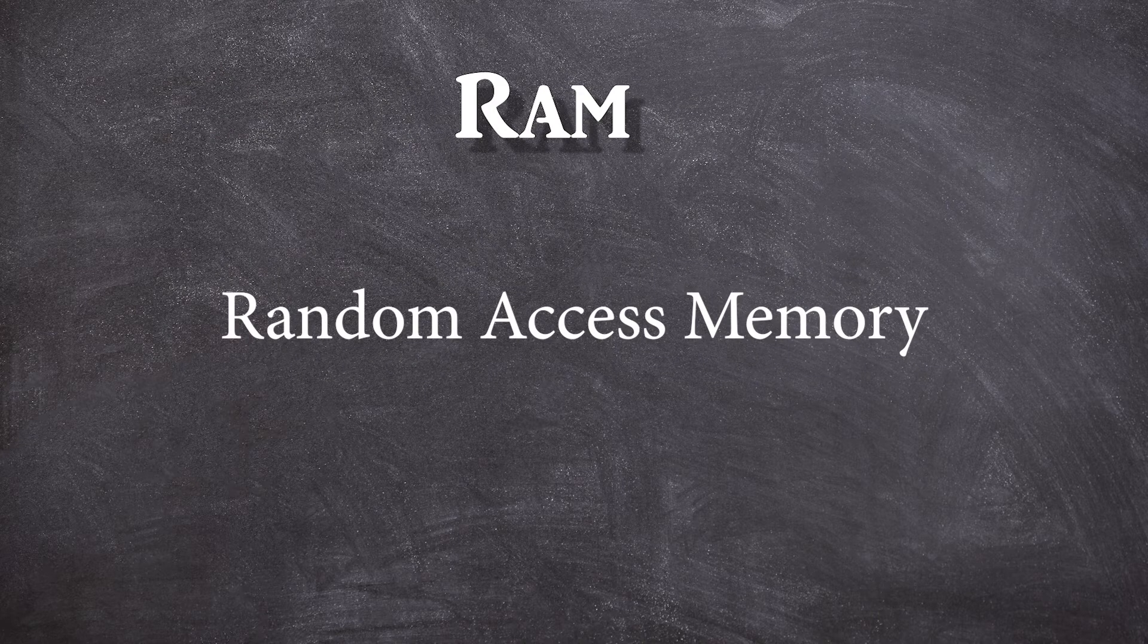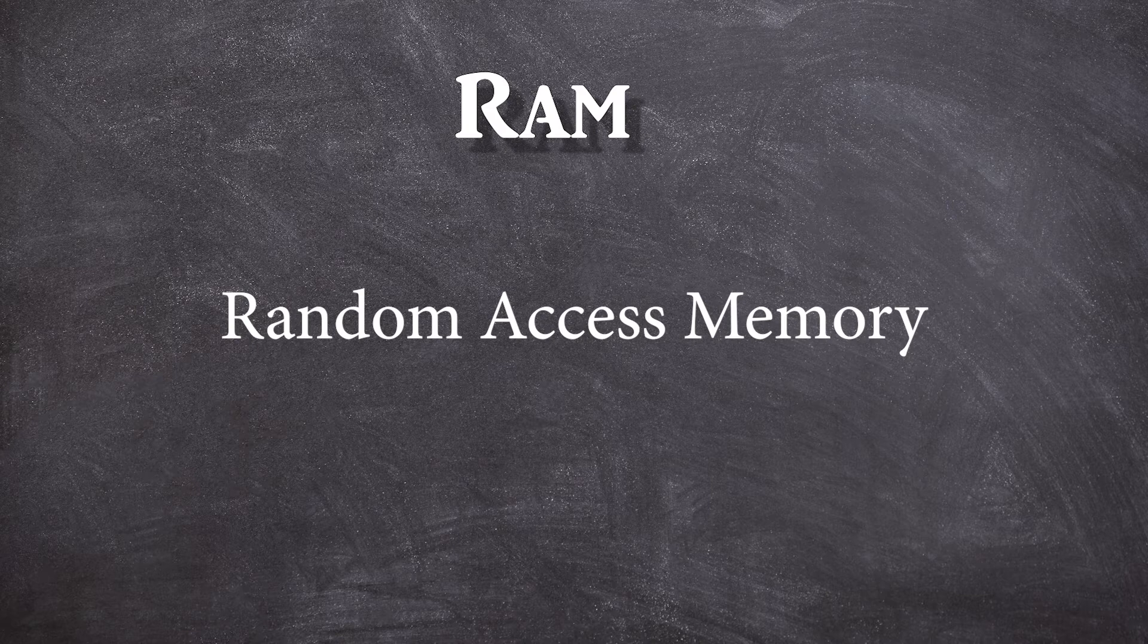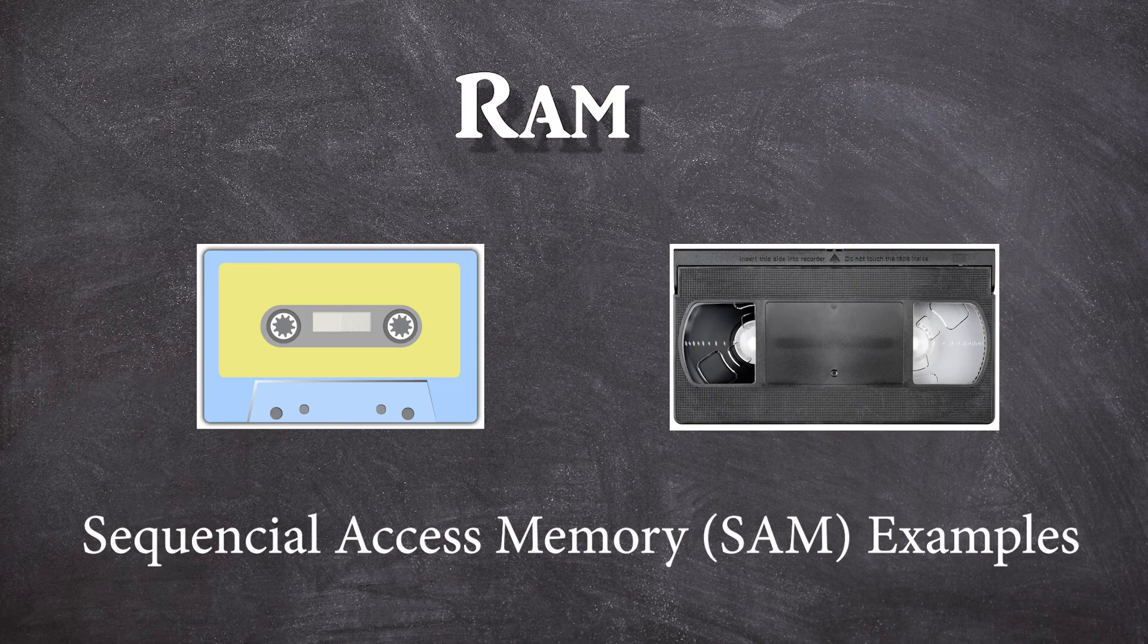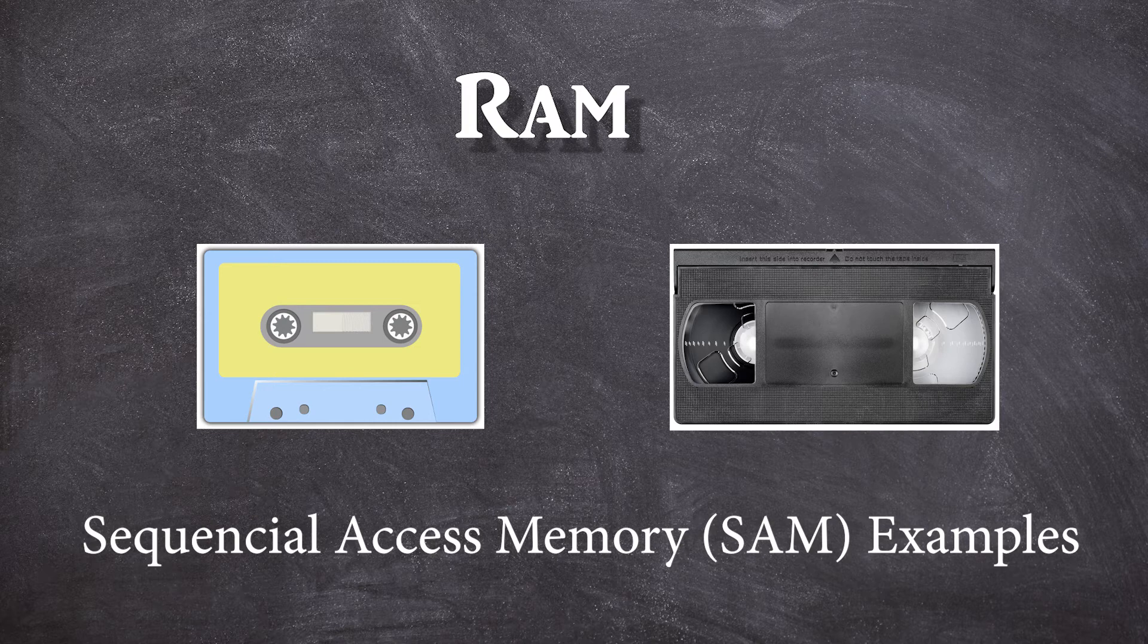Next up, we have RAM, which means Random Access Memory, meaning you can access any memory location at random. So if you have a variable at memory location 20, you can access location 20 right away. The opposite would be sequential access memory. If you have the same address at location 20 and you are at location 0 right now with sequential access, you'd have to go 0, 1, 2, 3, 4, 5 till you get to 20.